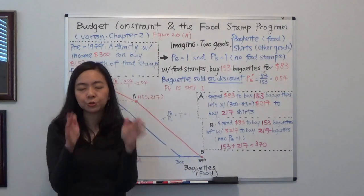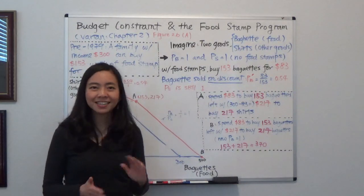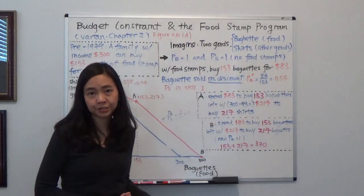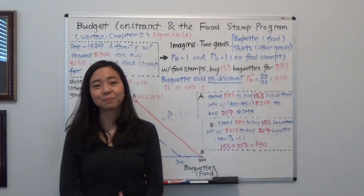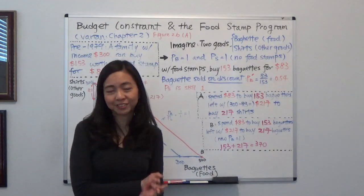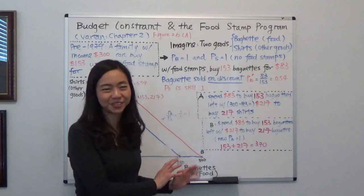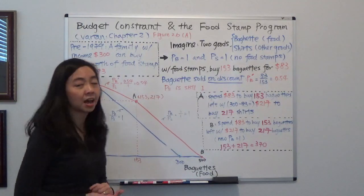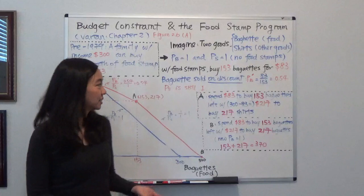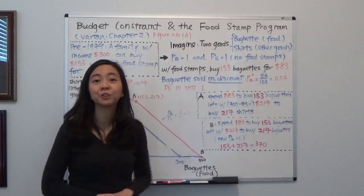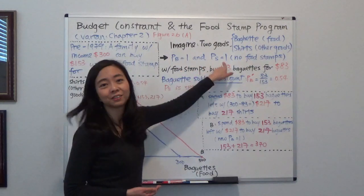In your mind, I want you to think about a family that has $300 and they only consume two goods. One is baguettes, that's our food. The other one is t-shirts, that will be considered all other goods. So initially you have $300. If you want to buy only baguettes, say the price of baguettes is $1 and the price of t-shirts is also $1.